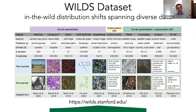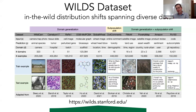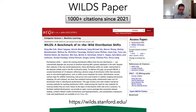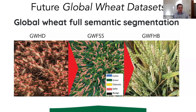This wheat dataset also contributed to a larger dataset called the WILDS dataset that looks at a whole range of things — pictures of animals, cells, text data, molecular data — as a test bed for developing new computer science techniques to handle the problem of distribution shift, where you train on one area and want to get it to work somewhere a bit different. The WILDS paper has had over a thousand citations since 2021. We're still contributing to the global wheat dataset — a third generation is coming with more detailed annotations and disease datasets.